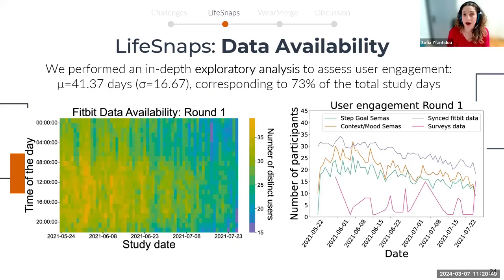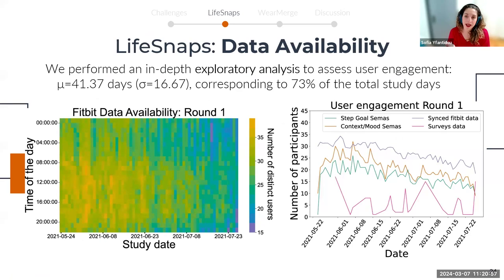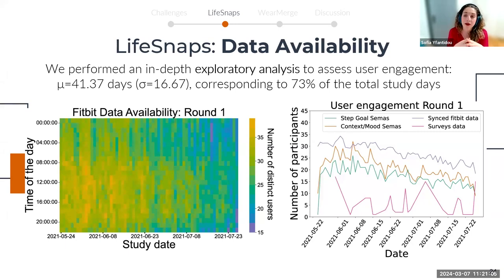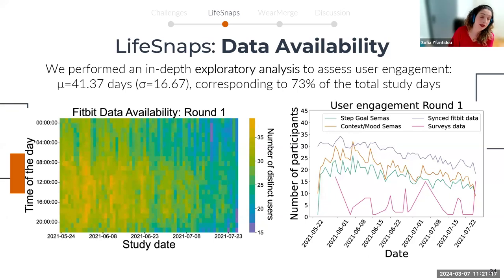While our user engagement did decline over time — that's why you see darker shades of blue and green on the right side of the heat map — user engagement remained relatively high, achieving a mean engagement of 41 days, corresponding to 73% of the study duration, which is higher than comparable studies.